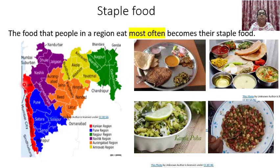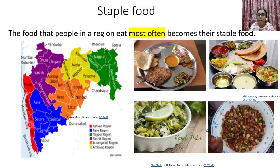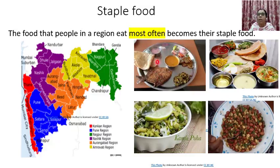People of the Konkan region prefer to eat fish because they live near the Arabian Sea. The Konkan region includes Thane, Raigad, and Ratnagiri — the red-colored path on the map shows this coastal strip of Maharashtra. The availability of fish is more here, but as we go farther from the Konkan region, food habits change.